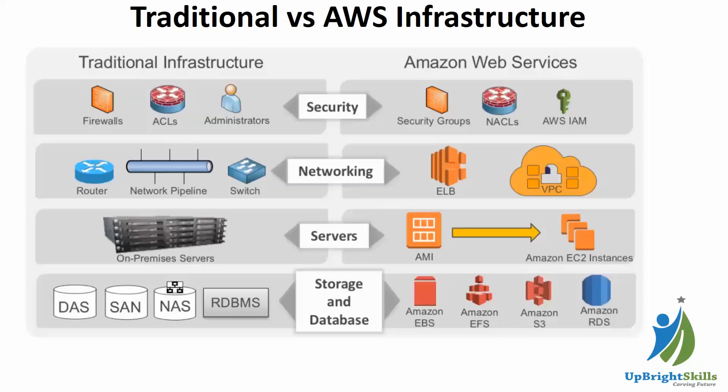In traditional infrastructure, we had directory services where we created our own set of users, assigned permissions, and managed those users. In AWS, for the security layer, we use security groups as a firewall, network access control lists for routing and allowing or denying traffic between subnets, and AWS IAM — Identity and Access Management — to create users and define permissions for AWS resources.